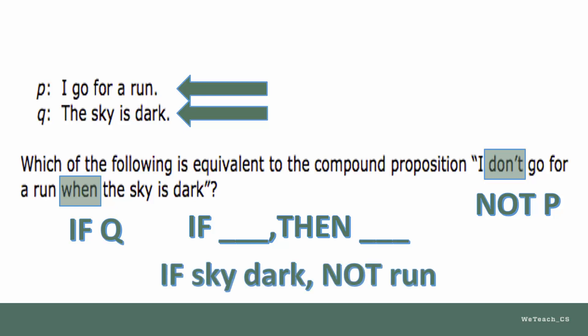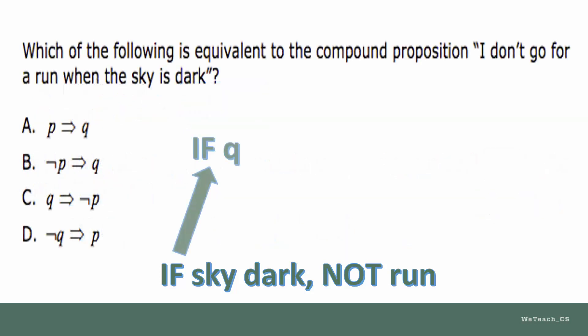Rearranging the sentence into a strict if-then structure results in, If the sky is dark, I don't go for a run, which symbolized would be if Q, then not P, which matches choice C.